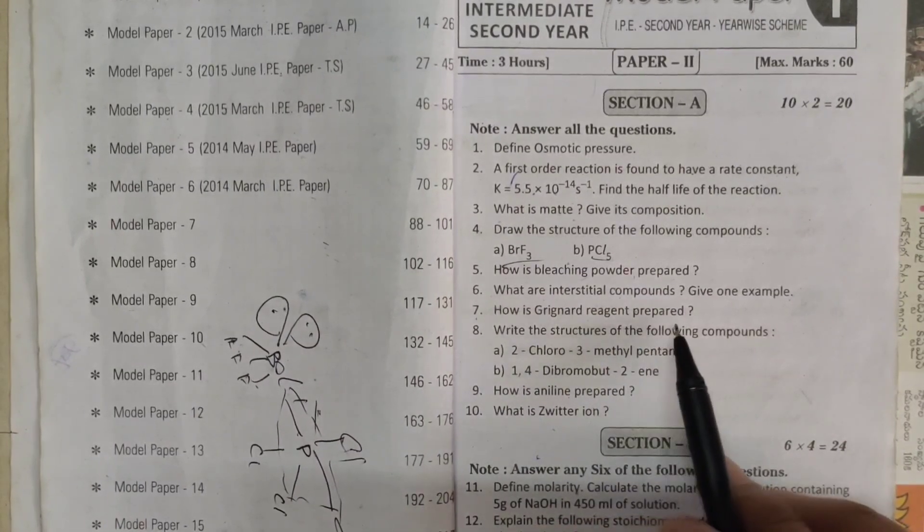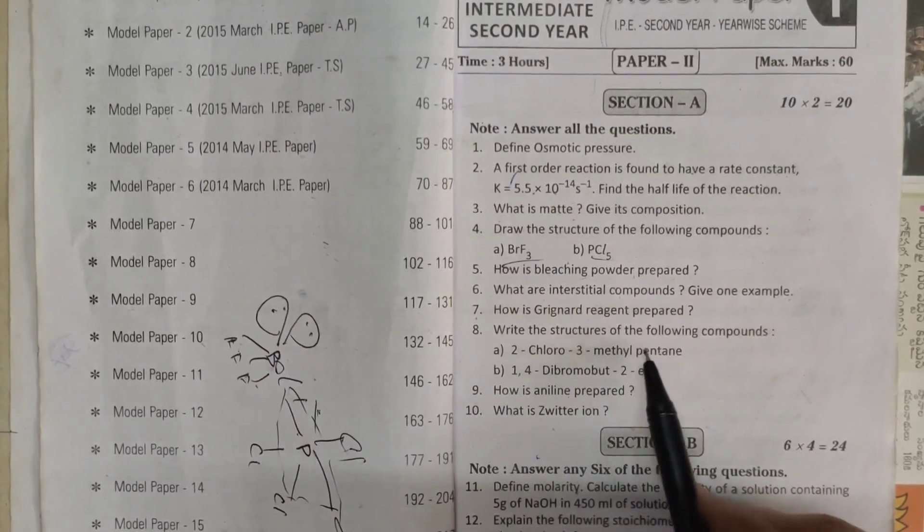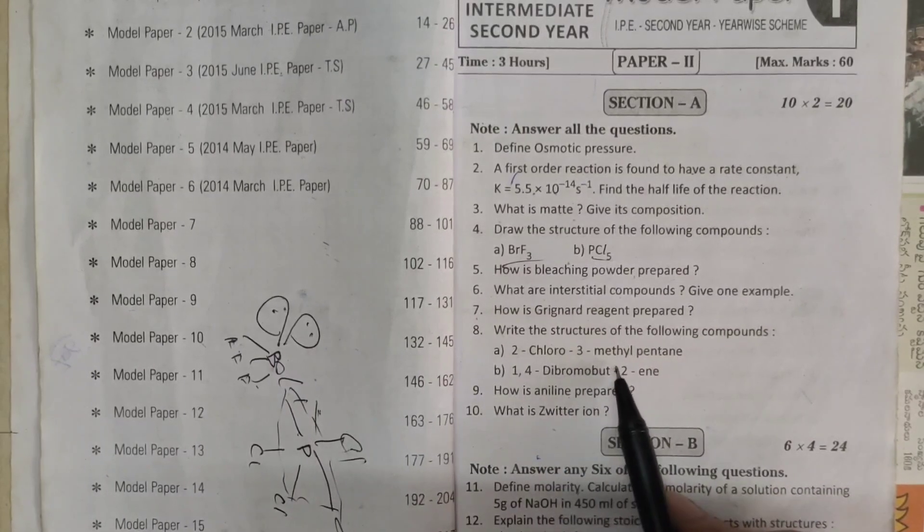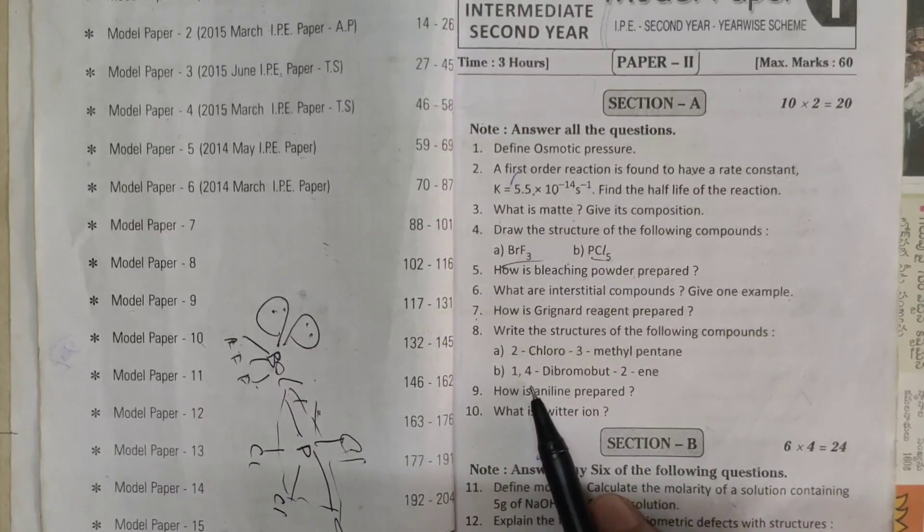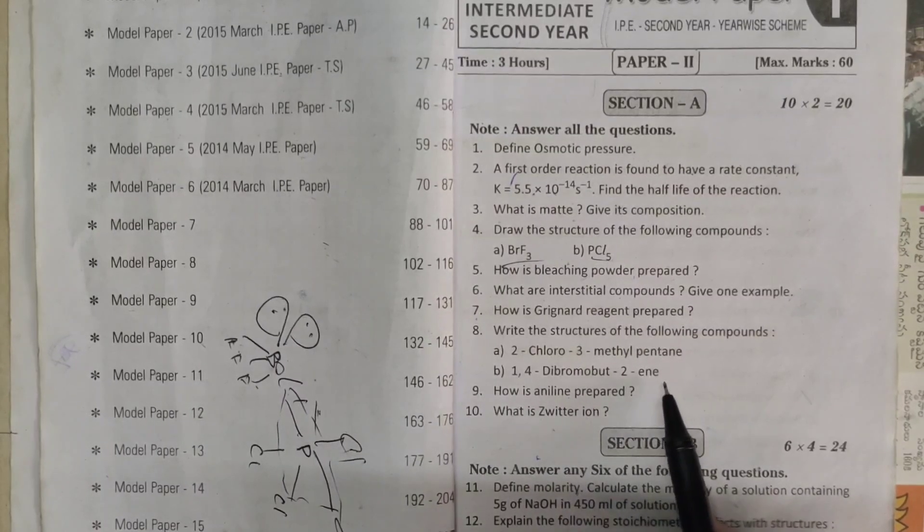Seventh one, how is Grignard reagent prepared? And eighth one, write the structure of the following compounds: 2-chloro-3-methyl-pentane, 1,4-dibromo-but-2-ene.